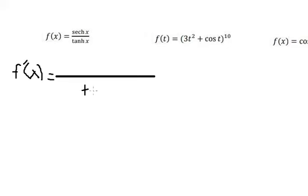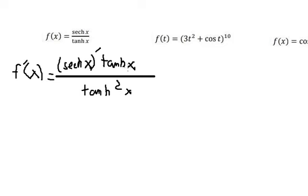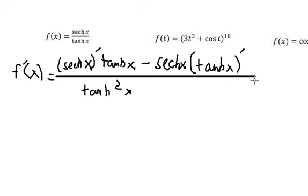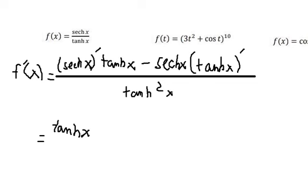So we get tan x squared. We then take the first derivative of secant x. The first derivative of secant x, you get secant x multiplied with negative secant x — so we have secant x times tan x.